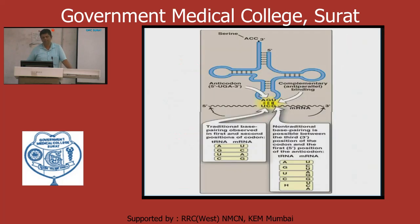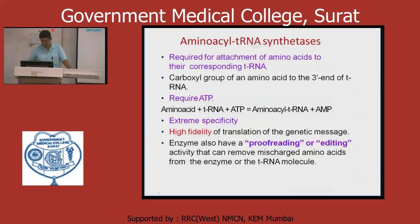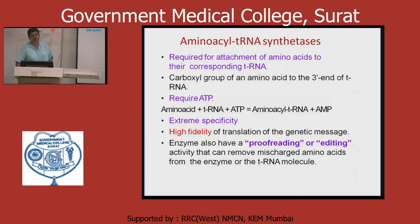The tRNA has an anticodon — for example UCG codes for serine, so serine will attach to the CCA end. Aminoacyl tRNA synthetase is the enzyme that activates the amino acid. The amino acid joins to the tRNA with the help of aminoacyl tRNA synthetase.